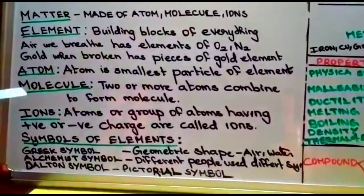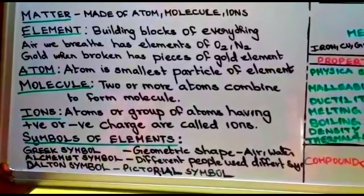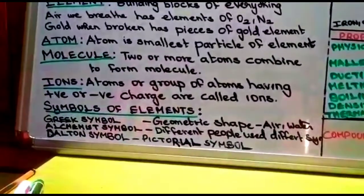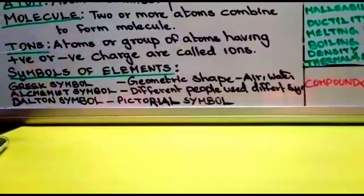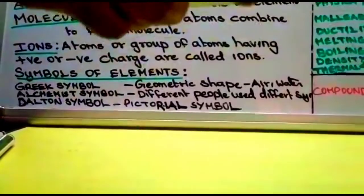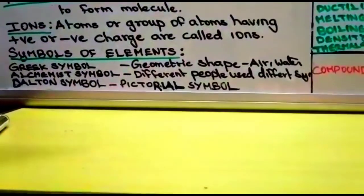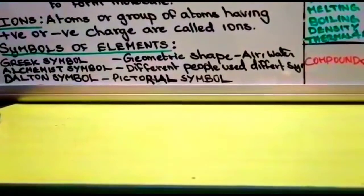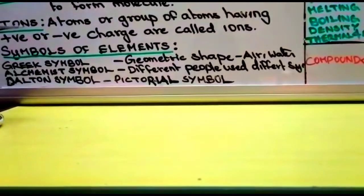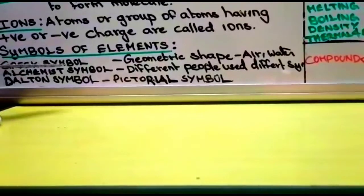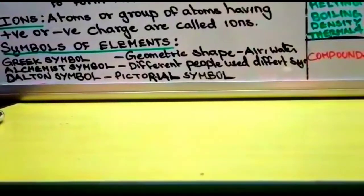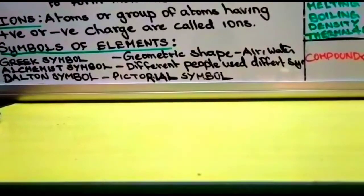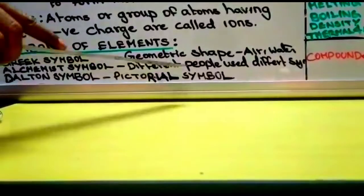Now we are going to see how the symbols of elements are represented. There were four different types. The first type was Greek symbol, where they used geometric shapes to represent air, water, fire, etc. Next is alchemist symbol, where different people used different symbols. The third one is Dalton symbol, which is a pictorial representation of elements like hydrogen and nitrogen.